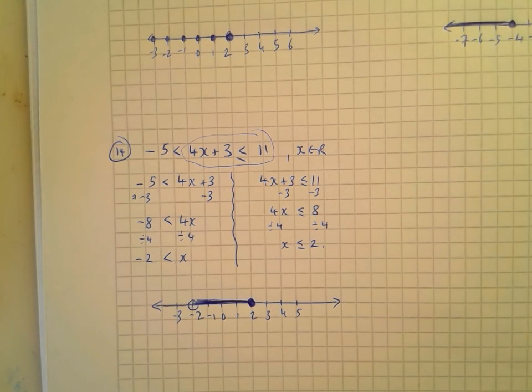Question 13: -3x - 5 ≥ 7. Add 5 to both sides: -3x ≥ 12. Divide by -3 — change the direction of the inequality: x ≤ -4. Draw the number line with -4 in the middle. Since x ∈ R, put a filled circle on -4 and draw a solid line to the left.